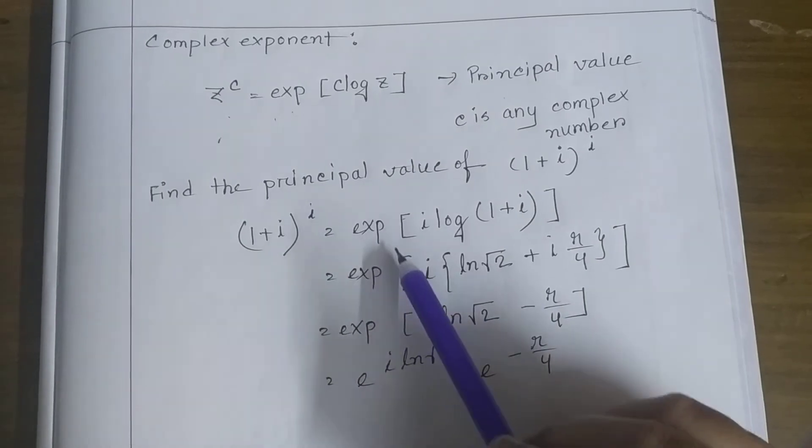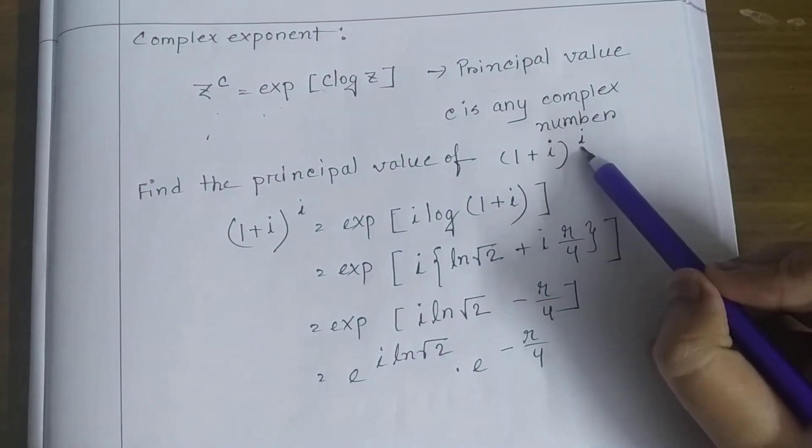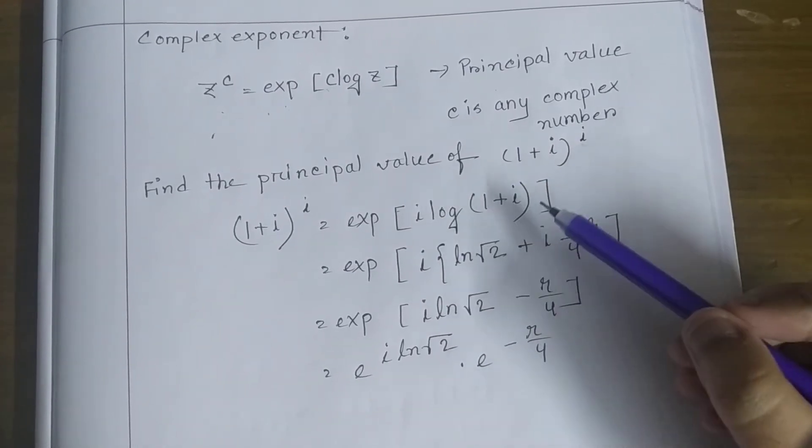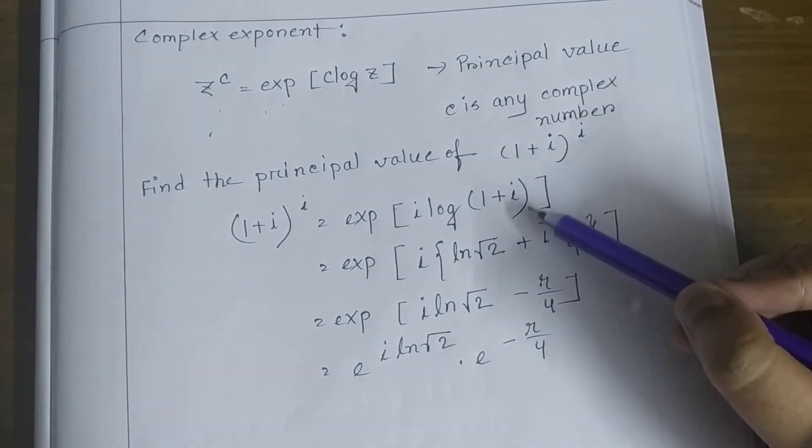So the solution will be exponent of c. What is c? The c is i. i log (1 plus i) because our z is 1 plus i.